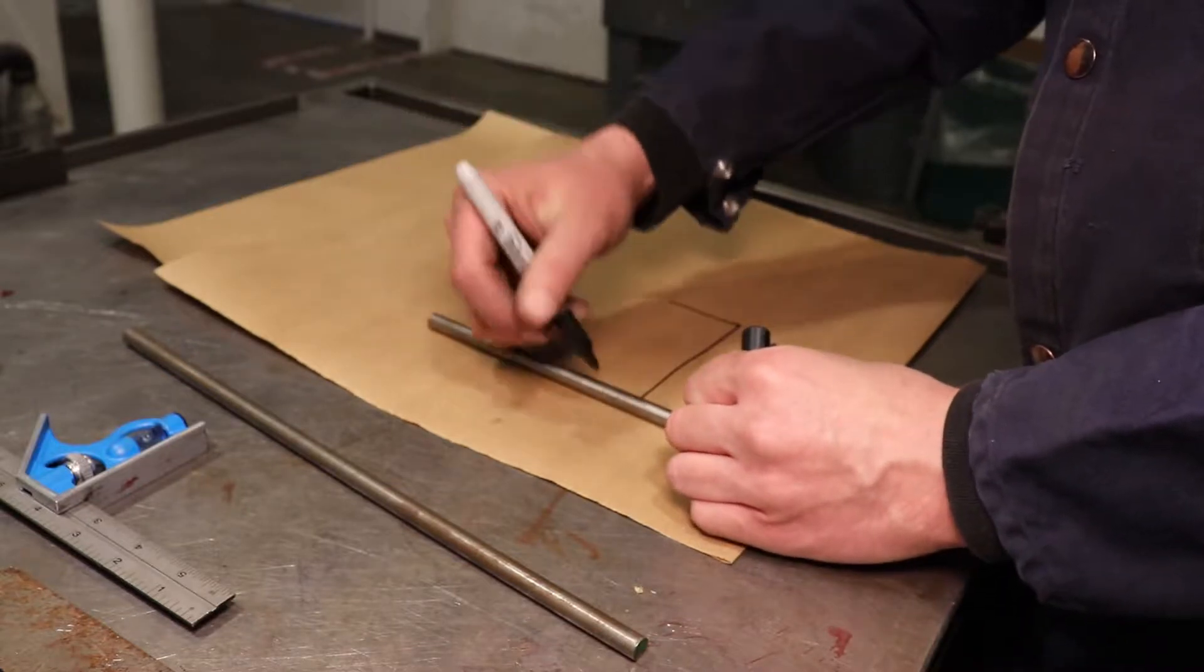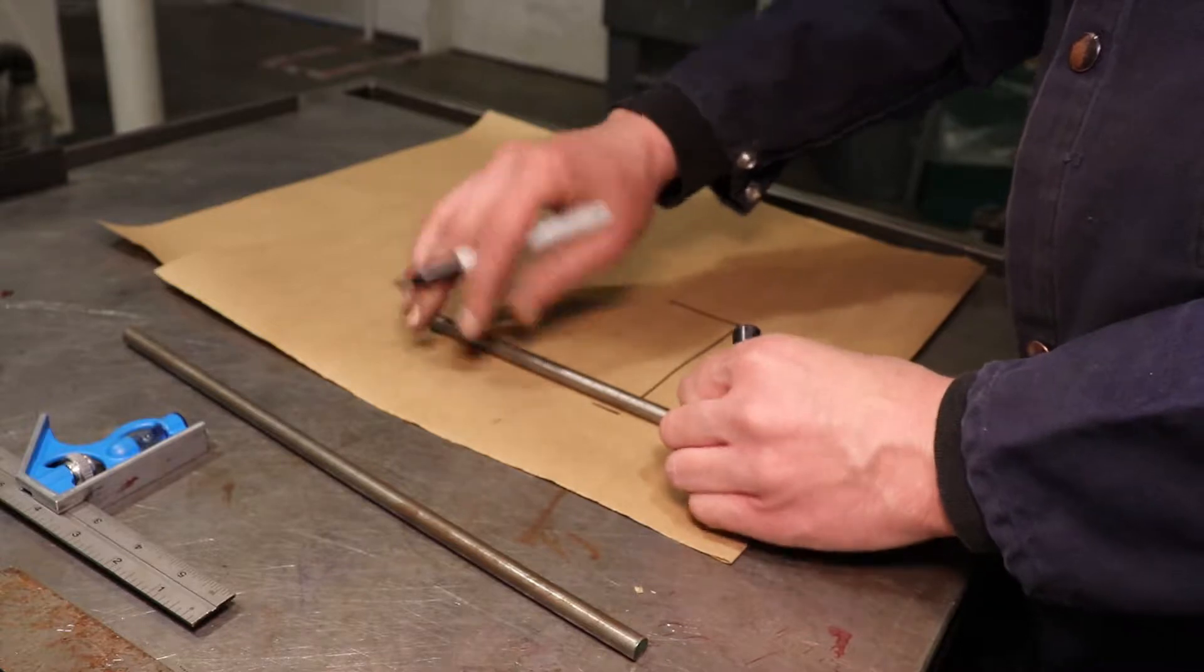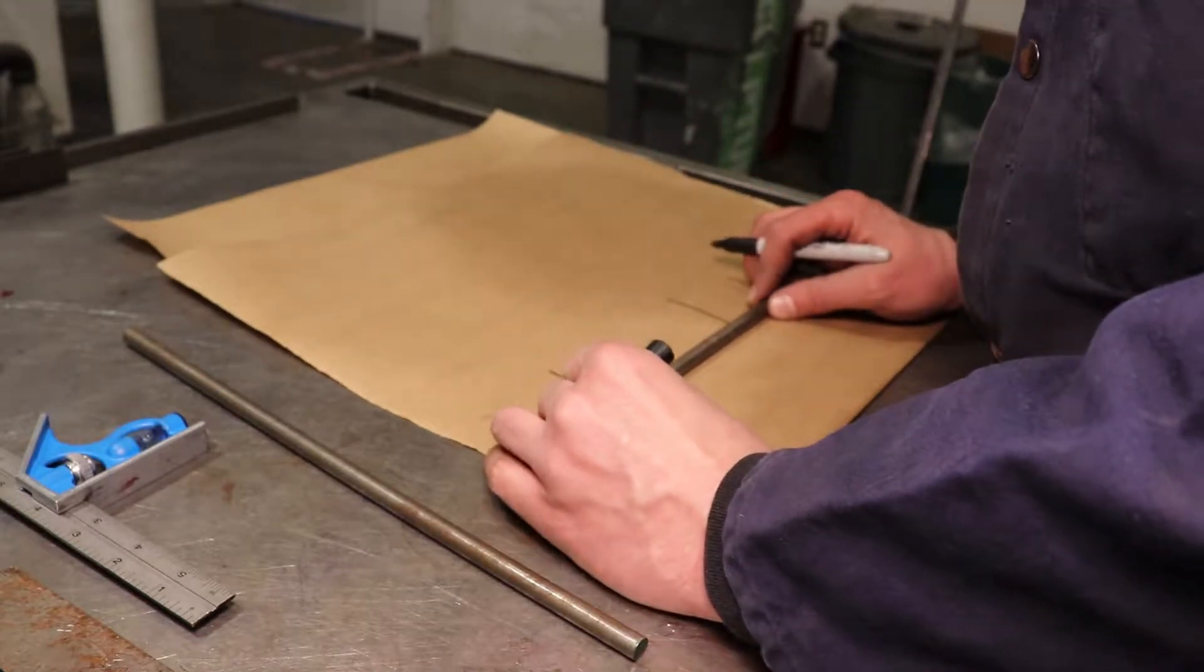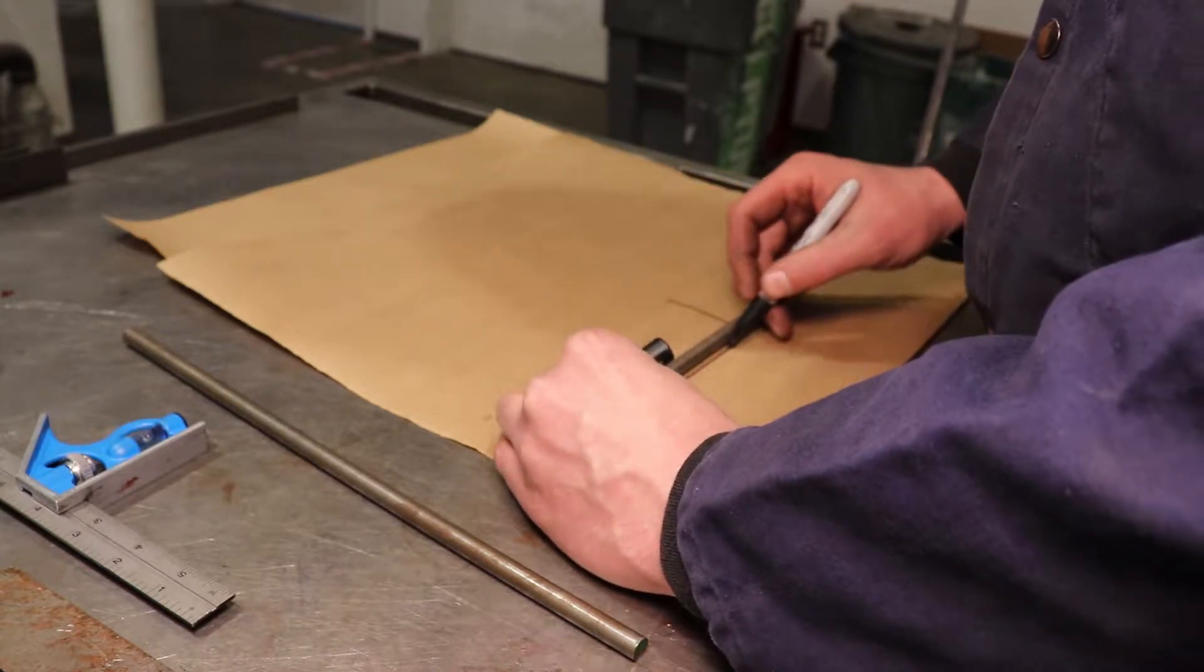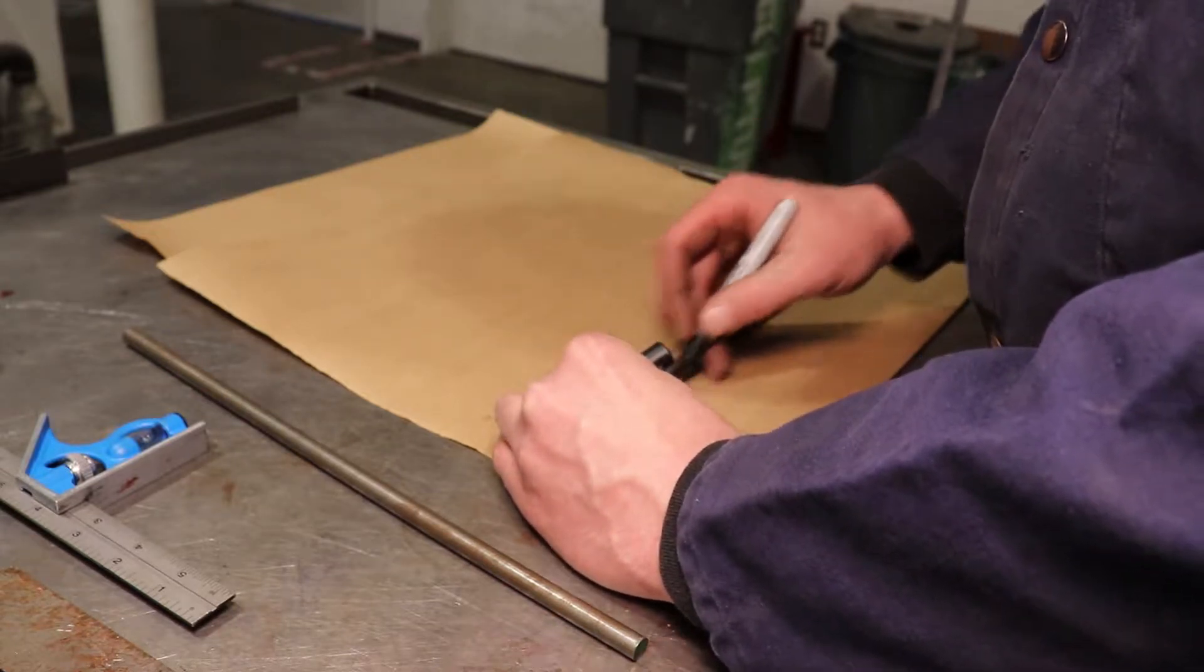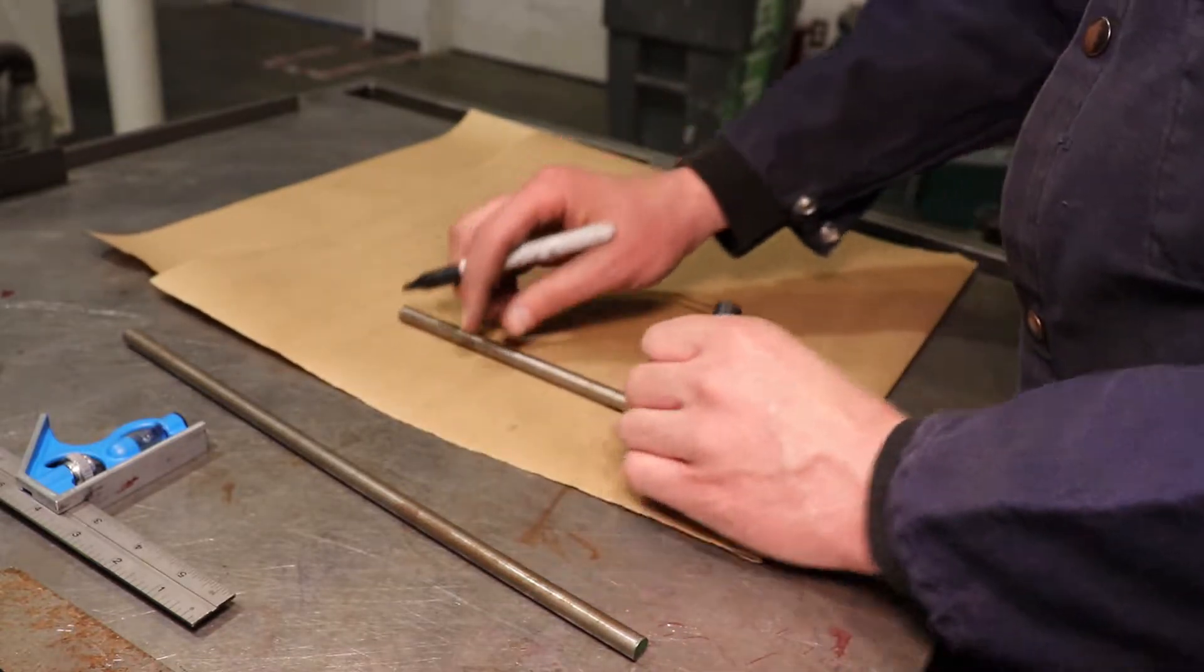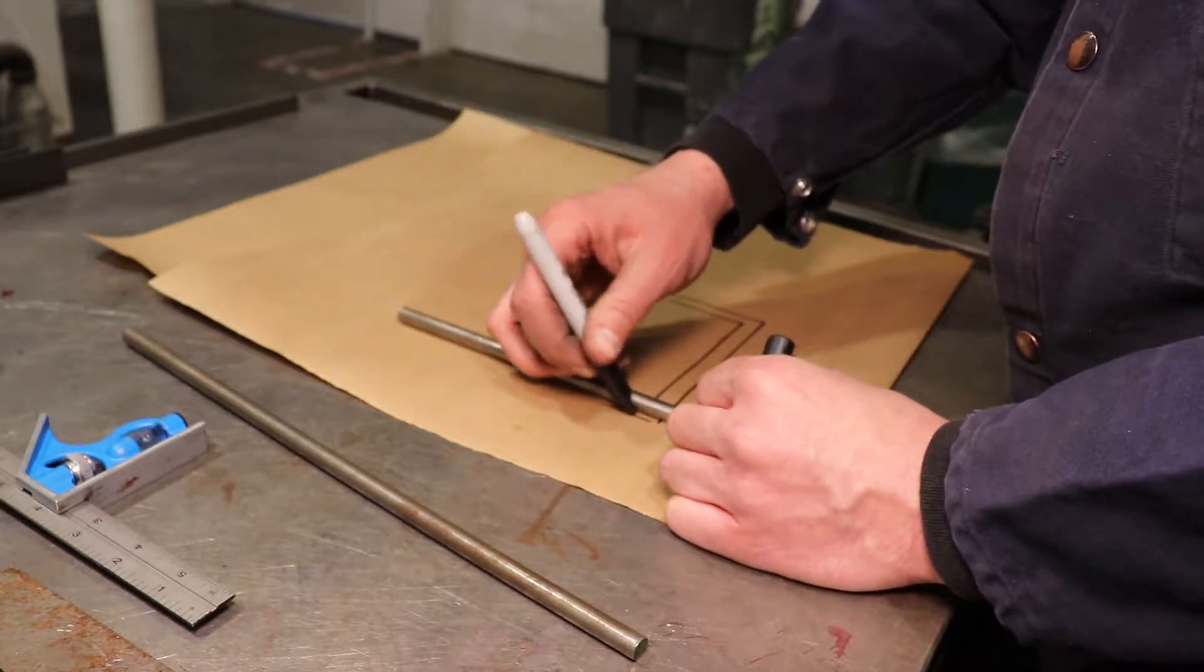Notice I'm also using the actual material that I intend on bending to account for the thickness as well. So I'm going around those lines, I measured out the inside portion of the bend that I wanted, and now I'm tracing the thickness of the material around as well, just rolling my part on the drawing and getting it the way I need it.